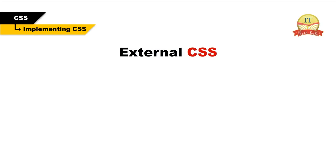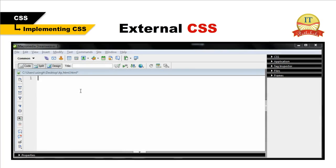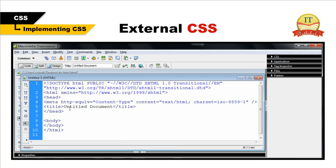External CSS. An external style sheet is a separate file where you can declare all the styles that you want to use throughout your website. You then link the external style sheet to all your HTML pages. This way, you only need to set the styles for each element once. If you want to update the style of your website, you only need to do it in one place. For example, type the following code into a plain text file and save it with a .css extension.